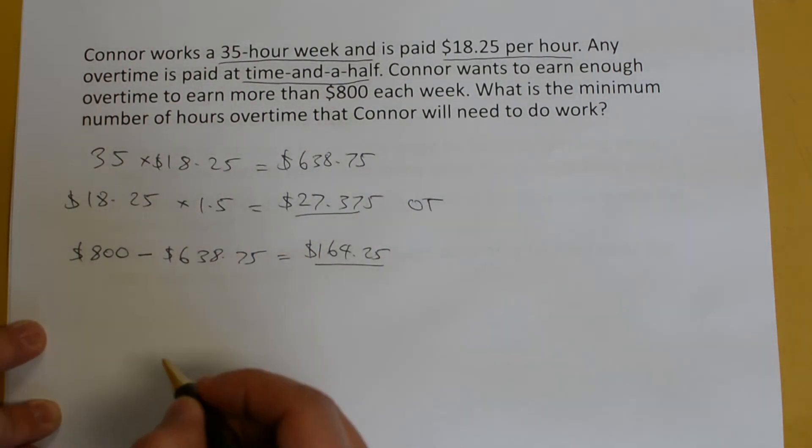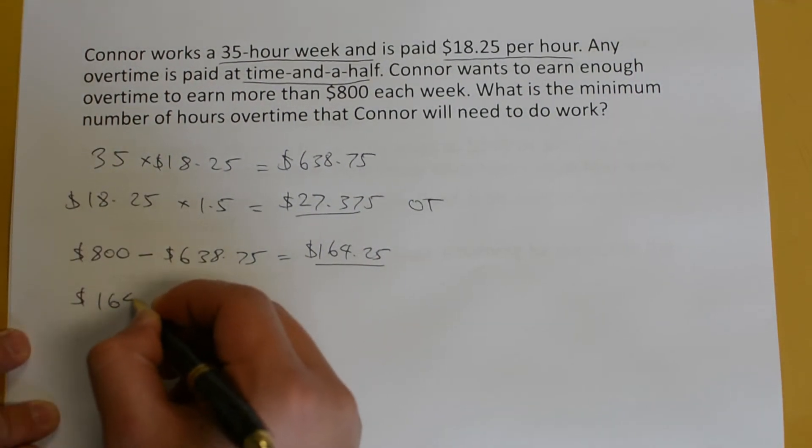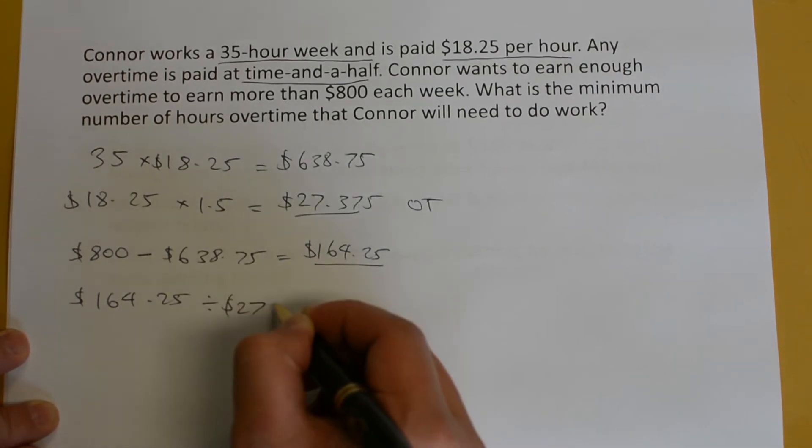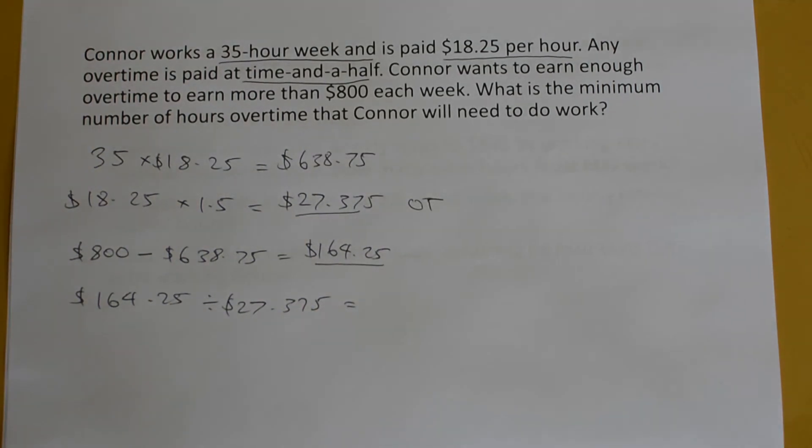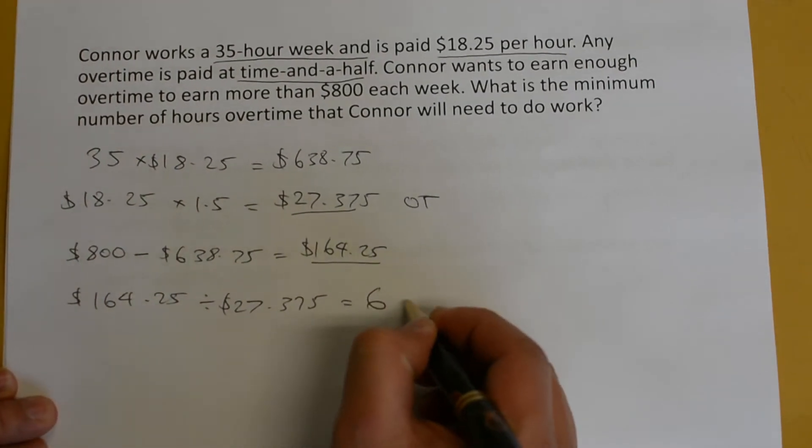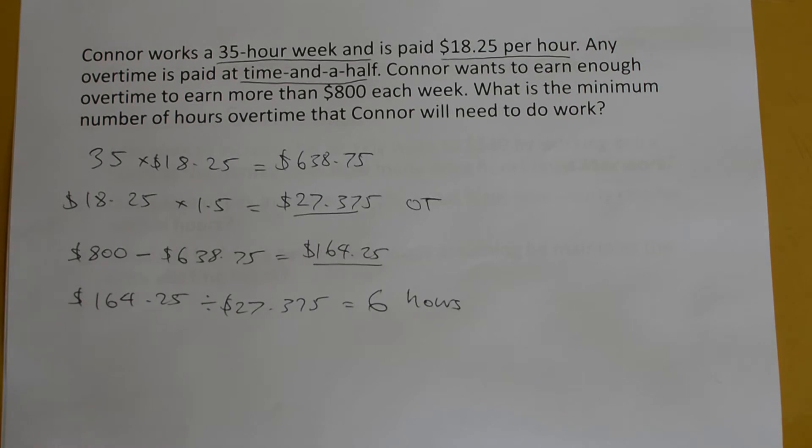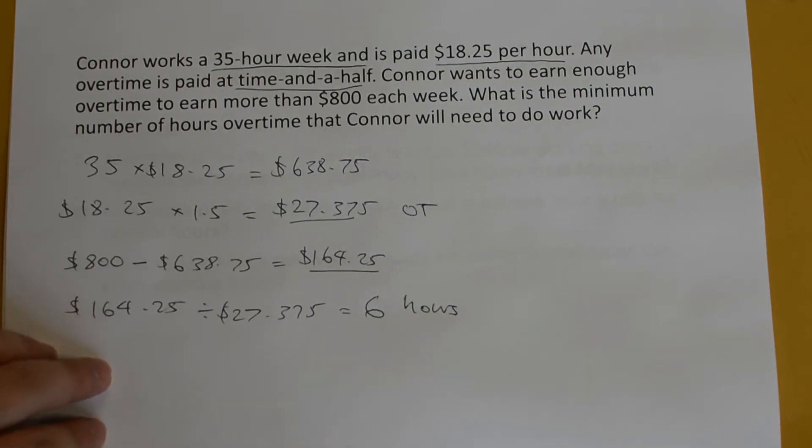To find out how many hours he needs to work, we get his amount that he needs, and we divide it by his hourly rate to find the amount of hours he needs to work. And we will get exactly six hours. That would be the minimum number of hours overtime that Connor will need to work to earn more than $800 each week.